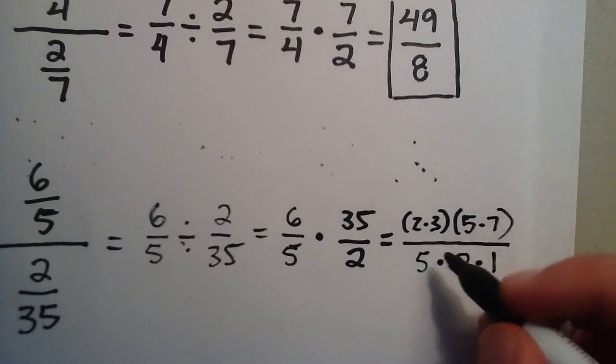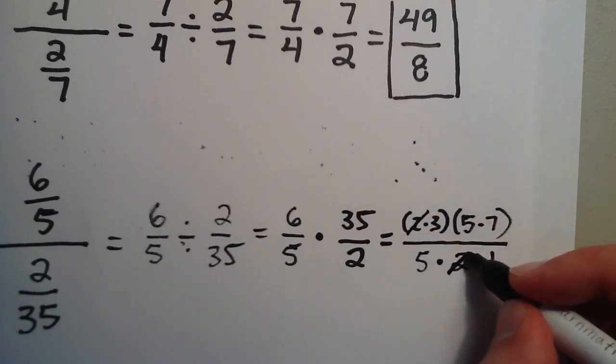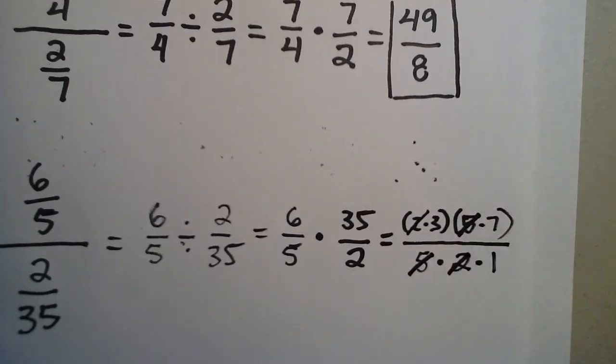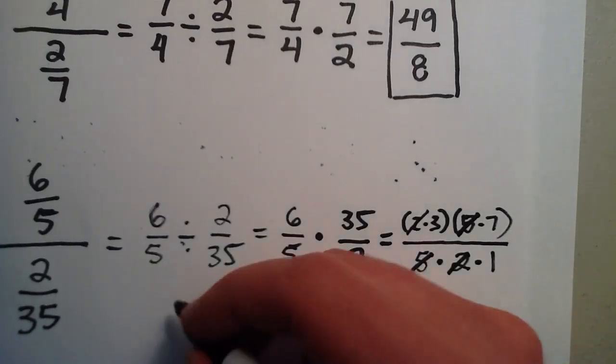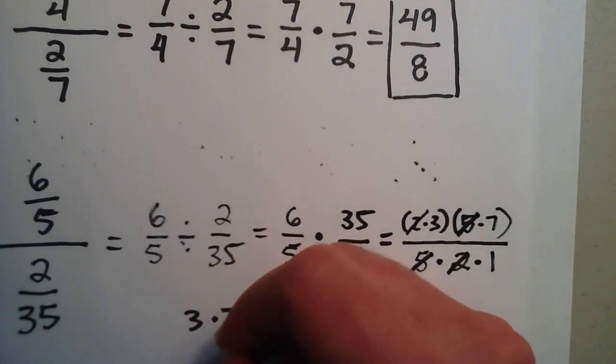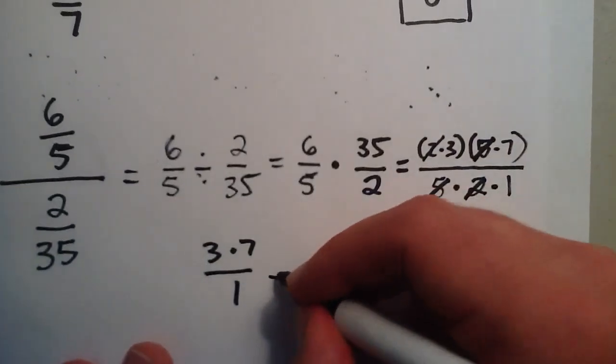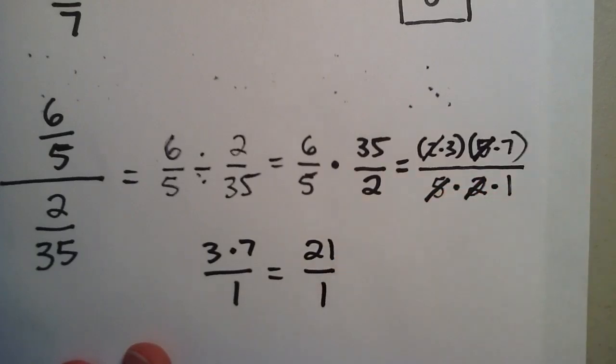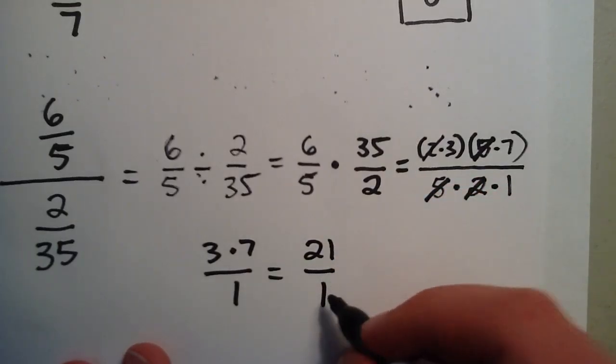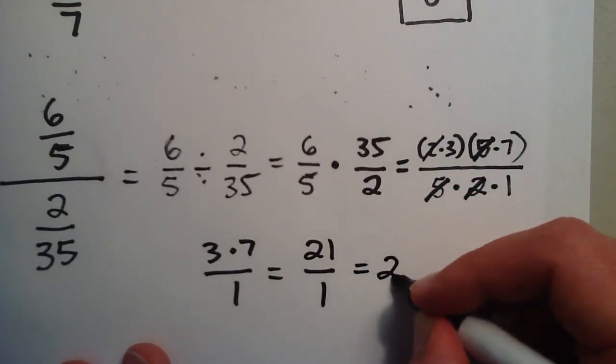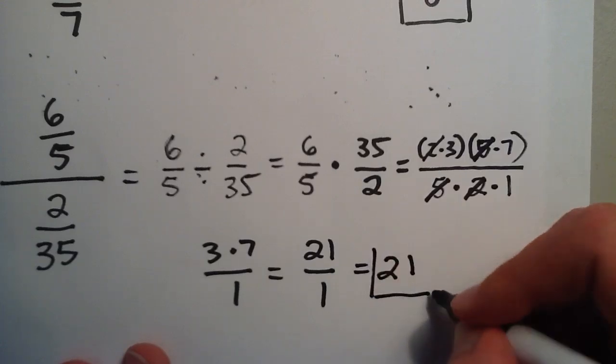And now we can just go ahead and cancel. 2 gets canceled with 2, 5 gets canceled with 5. So we're left with 3 times 7 over 1. And 3 times 7 is 21 and 1 is simply 1. But any number divided by the number 1 is just itself. So the answer is 21.